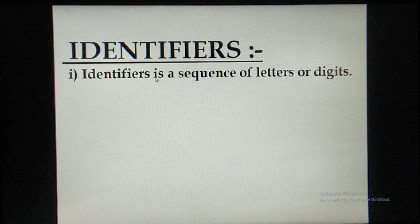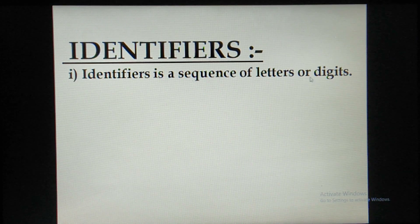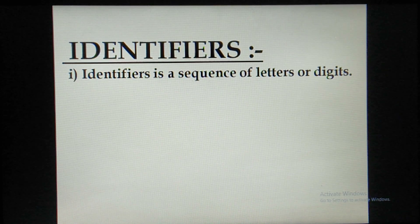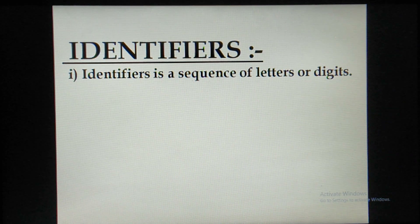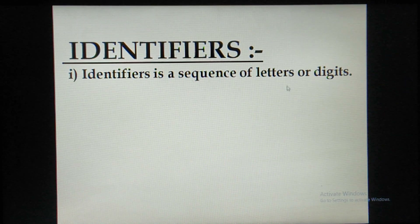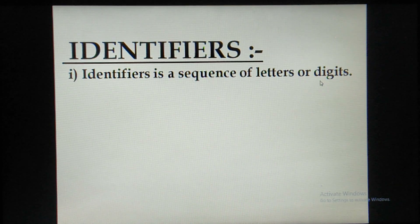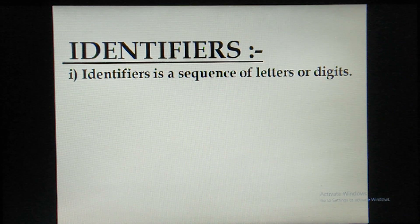Identifiers are a sequence of letters or digits. Remember: when writing an identifier, it should contain either letters (A, B, C, D...) or digits, or both. So the first rule of identifiers: it must be either letters, or digits, or both.